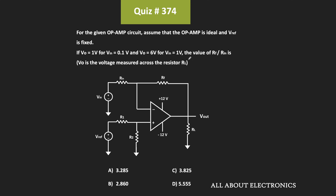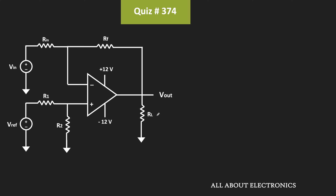Using these conditions, let us find the ratio of Rf to Rin. First, for the given circuit, let us find the relationship between the output voltage and the input voltage. To find that, we'll use the superposition principle, considering one source at a time. First, let us consider Vin as zero and find the output voltage due to the reference voltage alone.